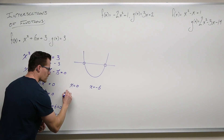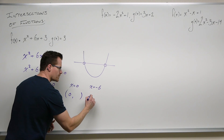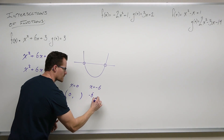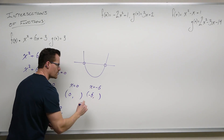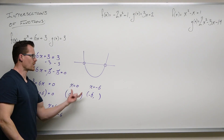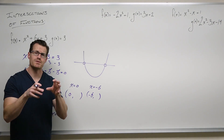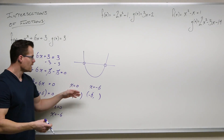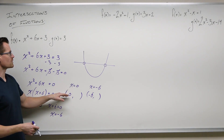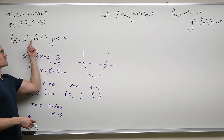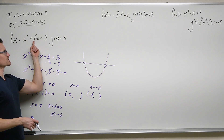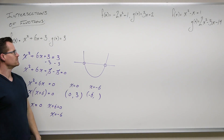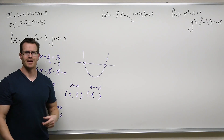So we're going to create an ordered pair: zero comma some number, and negative six comma some number, because those will be our points of intersection. If we plug in zero, we get zero squared plus six times zero is zero, plus three is three. Can't I just plug in zero here and get three? Yeah, that's the whole point — that's a constant.